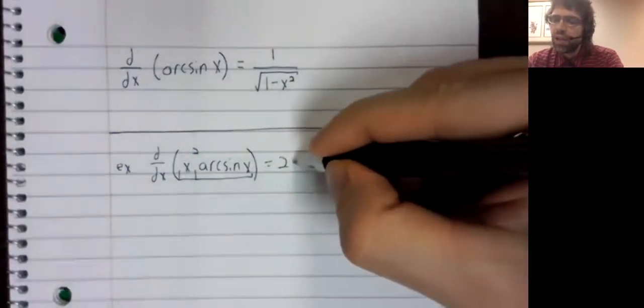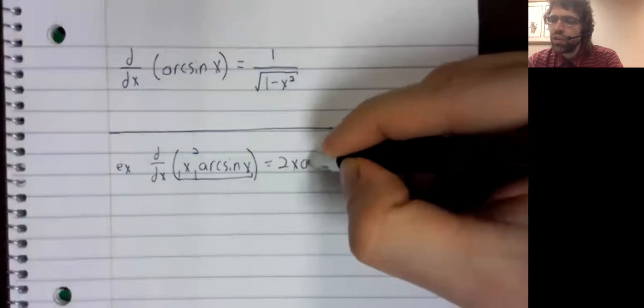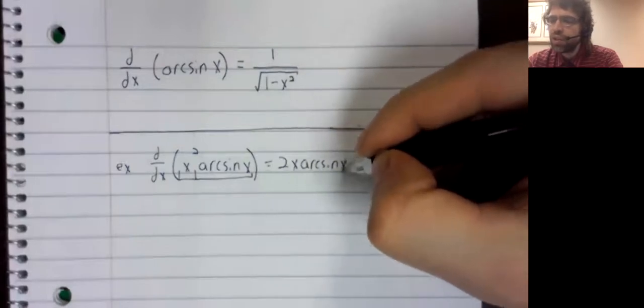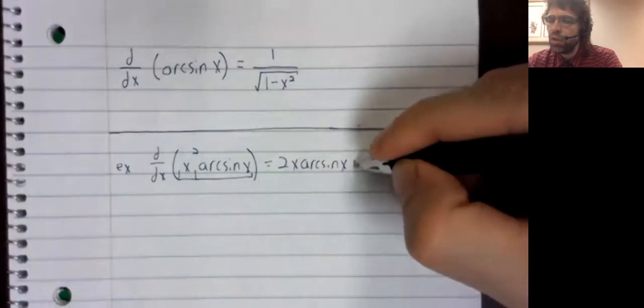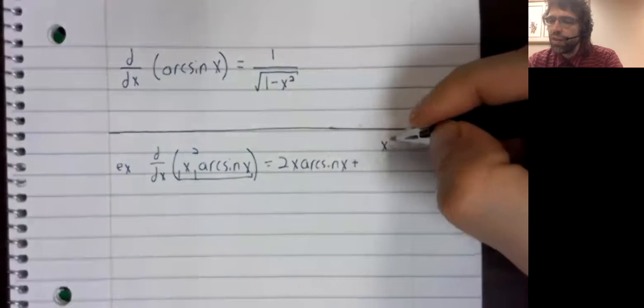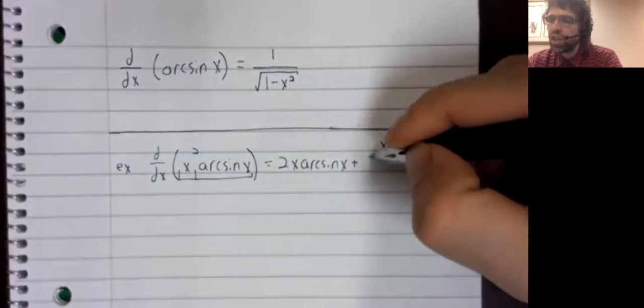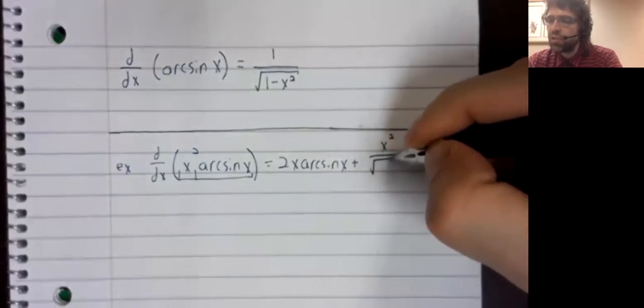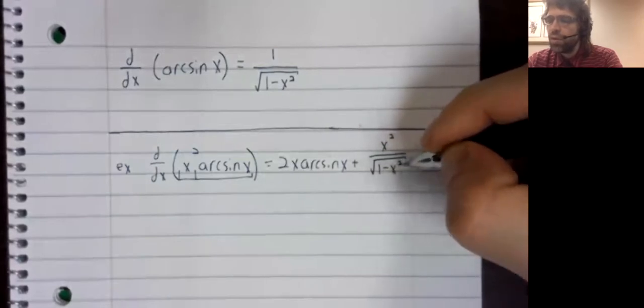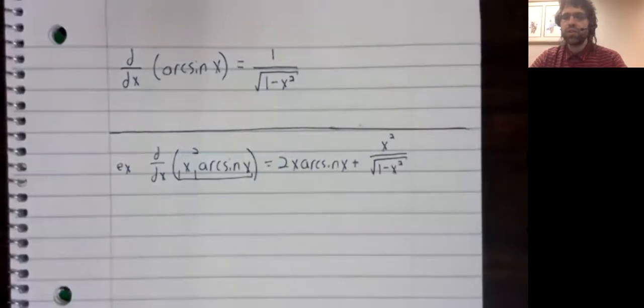The derivative of the first function, leave the second function alone. The first function times the derivative of the second function.